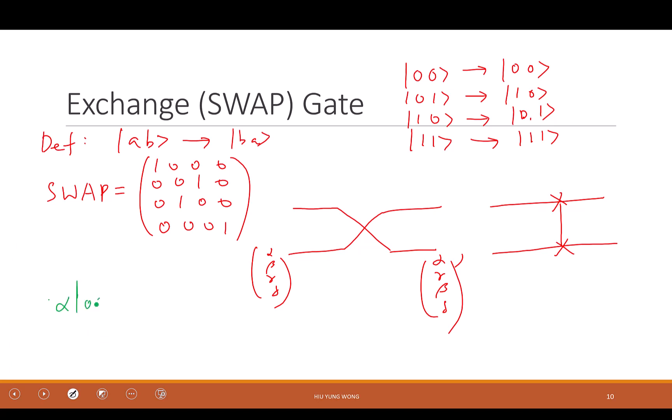Alpha |00⟩ plus beta |01⟩ plus gamma |10⟩ plus delta |11⟩. So what do we say? We say we're going to swap it, right? So this becomes |00⟩. This becomes |10⟩. This becomes |01⟩. This becomes |11⟩, right?